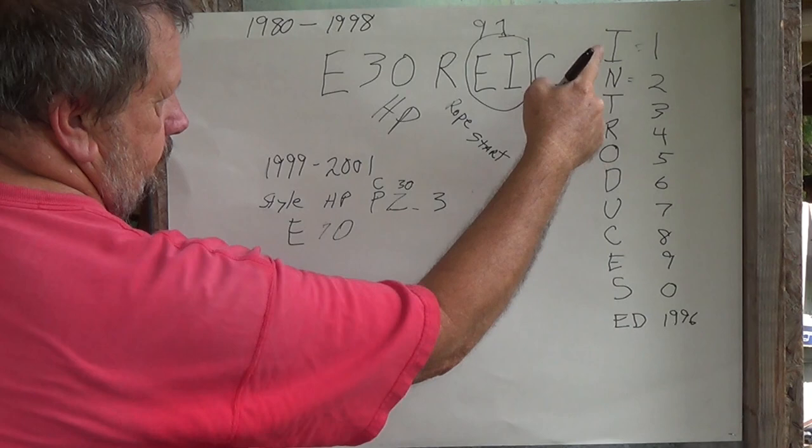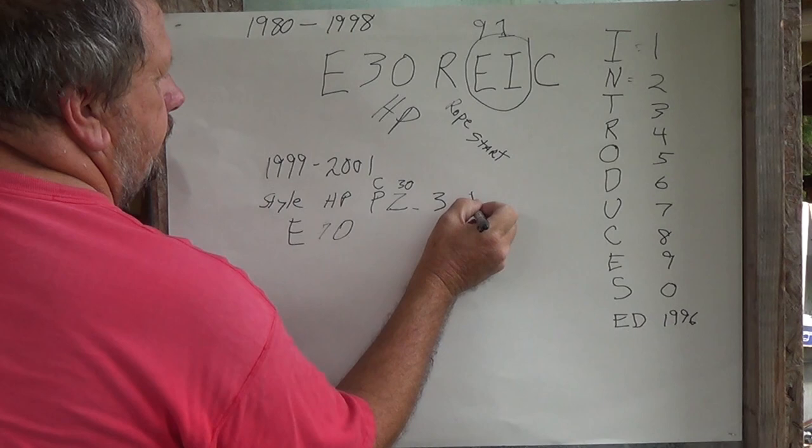Then you're going to have your INTRODUCES here. Then you're going to have two letters beside each other, like an EE would be a 99.